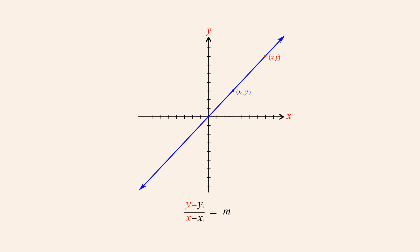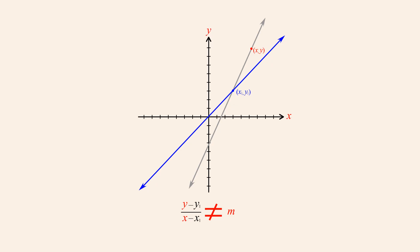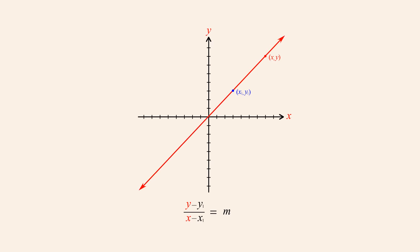On the other hand, if we use a point which does not lie on the line, the calculated slope will not be equal to m. So only points which lie on the line will produce the correct values for m and thus satisfy this formula. This line can therefore be thought of as a collection of all points with coordinates x and y which satisfy this equation.